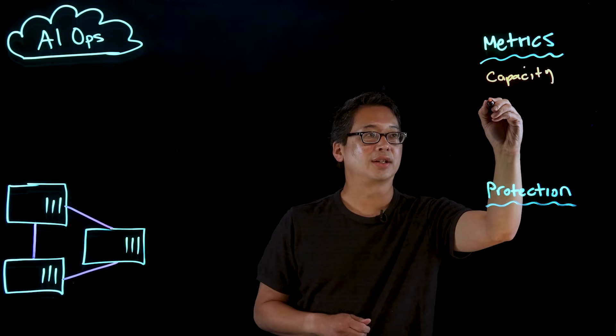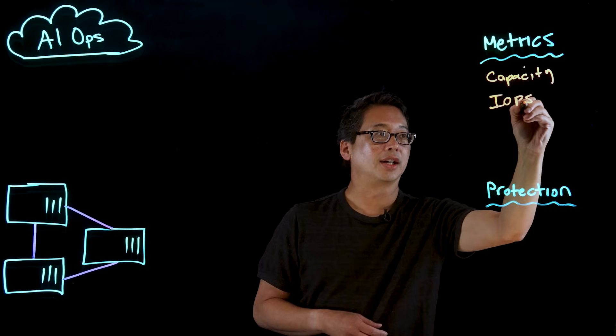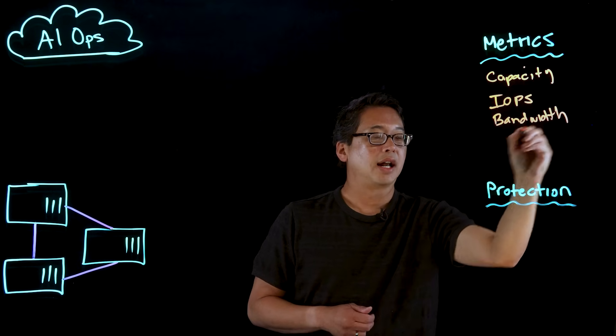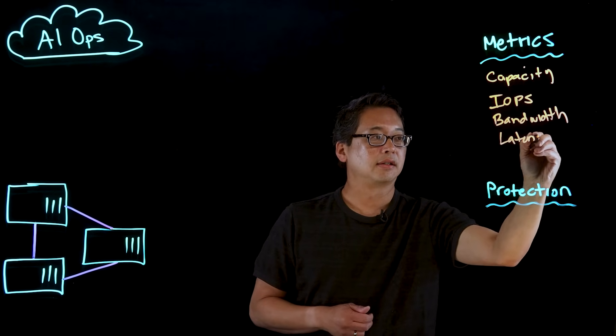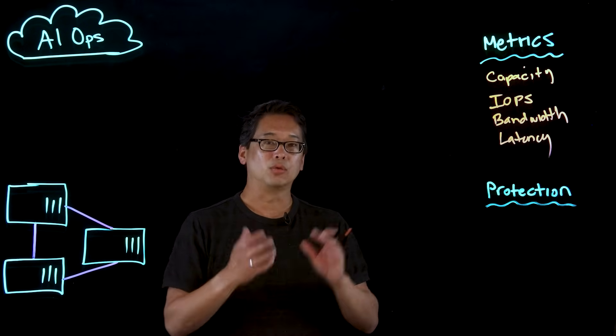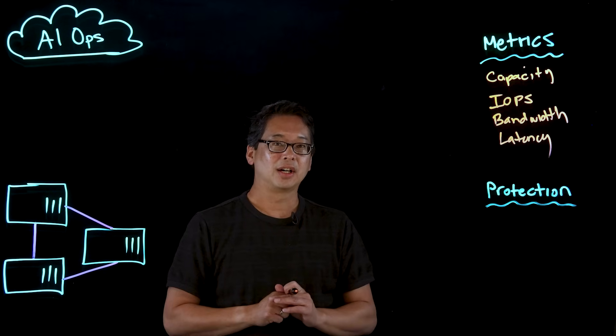We also have performance metrics such as IOPS — IOs per second — bandwidth, and latency. Bandwidth describes how many cars are on the road, how congested the pipe is between the server and storage. Latency is how fast the round trip is from point A to point B. Some applications require very low latency, and some are more lenient. These are all metrics that the AIOps machine learning will examine as these storage partitions are in place.